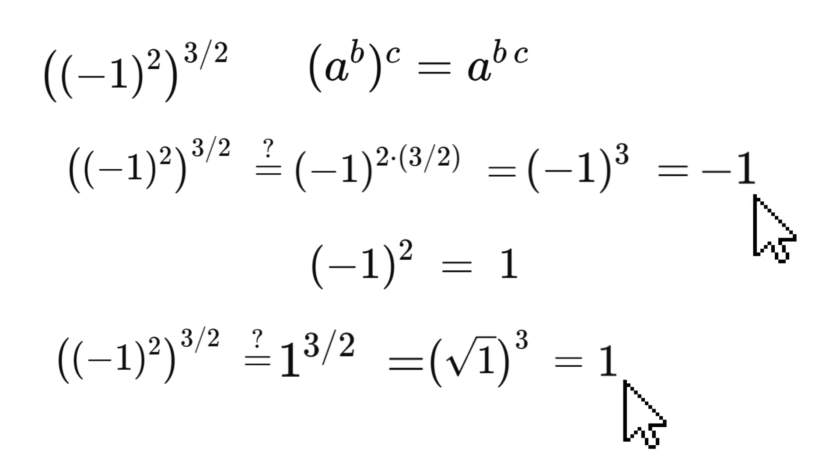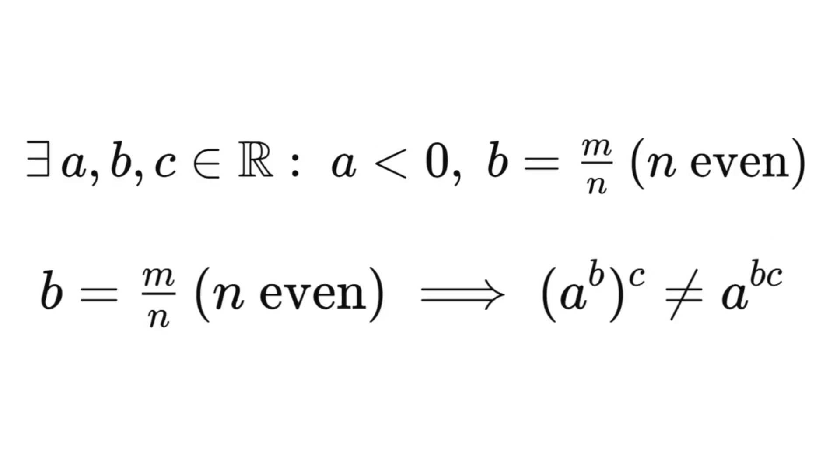Here's the deal, that shortcut rule doesn't always work. In the real numbers, if the base is negative and one of your exponents has an even denominator, the whole thing breaks down.